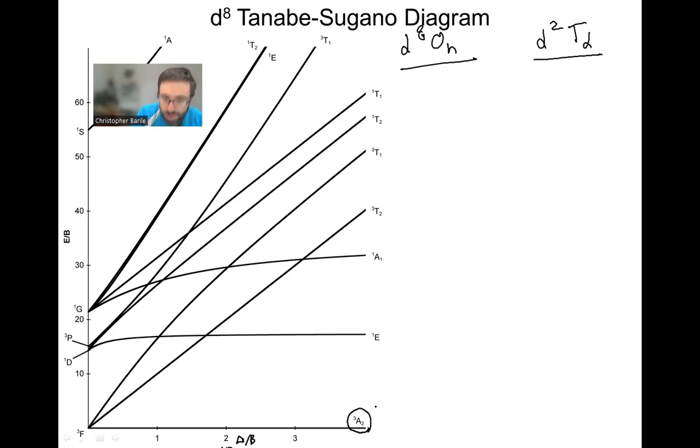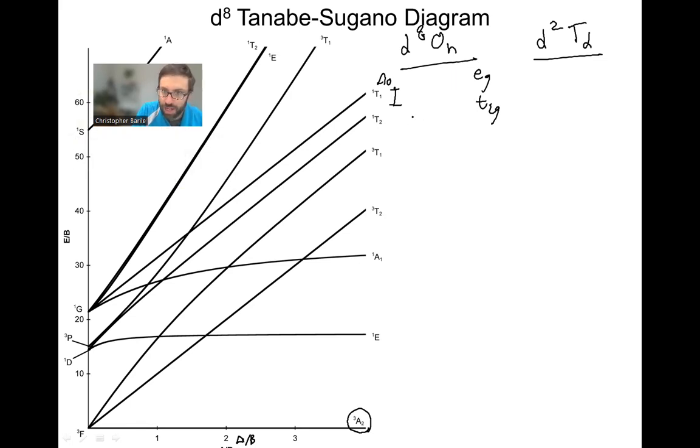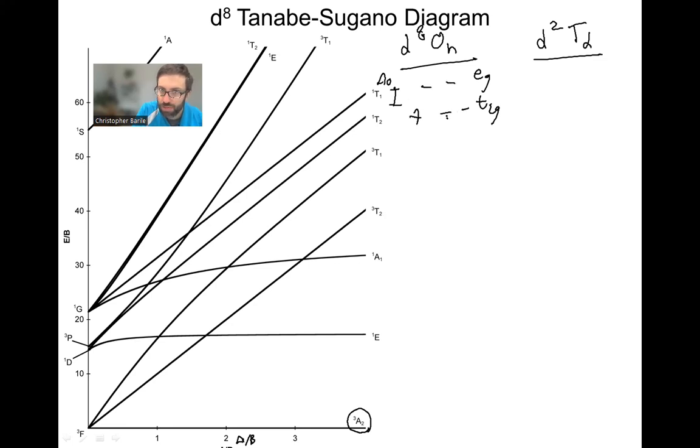Now that we have that under control, let's think about why we have a triplet as our ground state. For octahedral, we know we have delta O. We have three T2Gs that are lower in energy than our two EGs. And if we populate our eight electrons, it doesn't really matter what order we do this in. We're always going to get the same spin. I'll do it again. How I populated that was I pretended like this was a high spin complex. So I went boom, boom, boom. And then the fourth and fifth electron I put as if it was high spin.